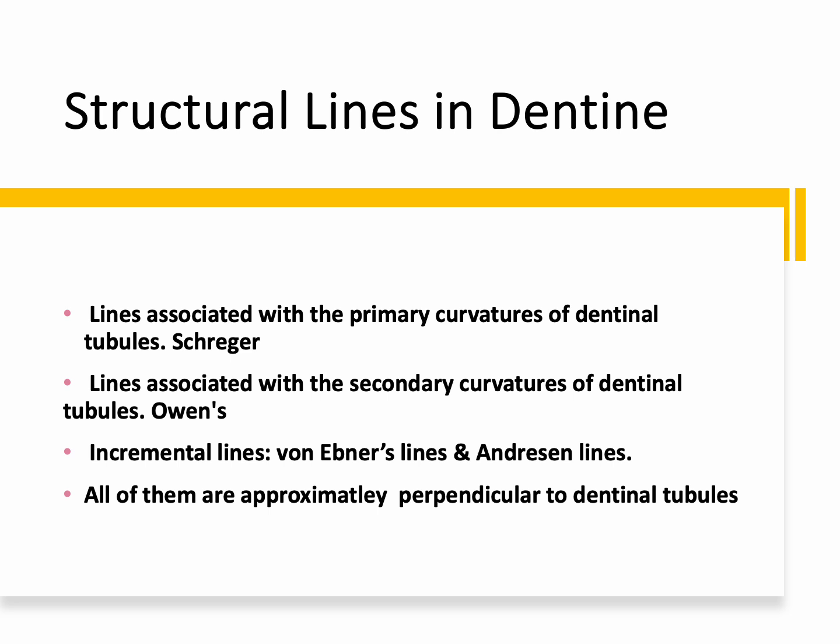All of these lines are approximately perpendicular to the dentinal tubules, and we are going to see that in histological sections. These are the three types: associated with primary curvature, secondary curvature, or the incremental lines of secretion.